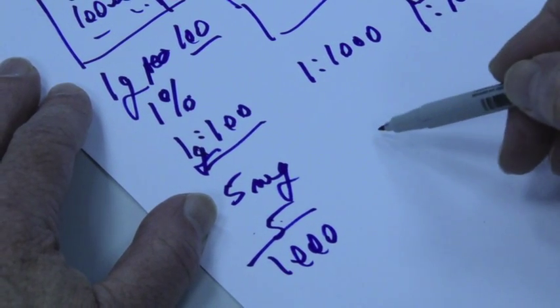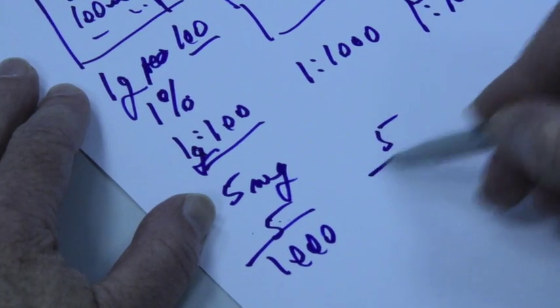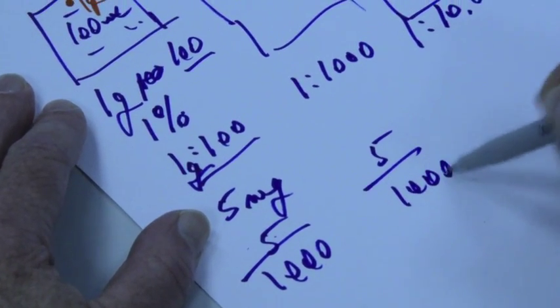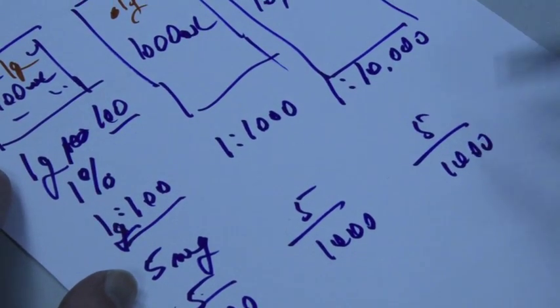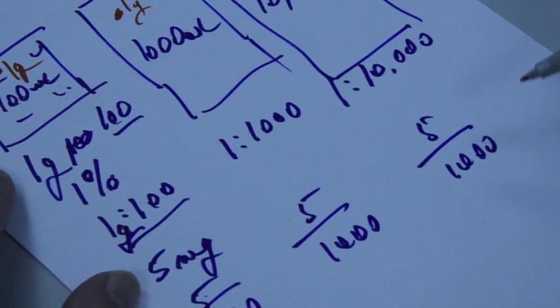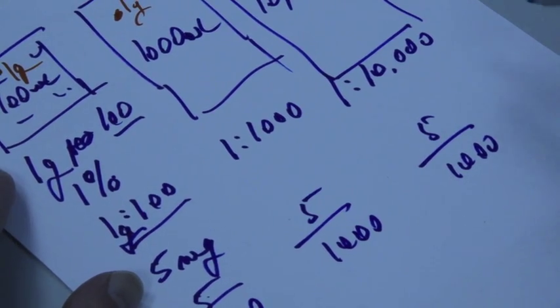And you'll find when we do that it's much easier to sort of cancel out later on. So again, this would be 5 over 1000 if it was 5 milligrams, and the same for over here. It's just converting those grams back to milligrams so that we get like for like.